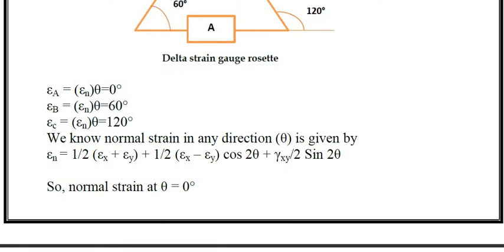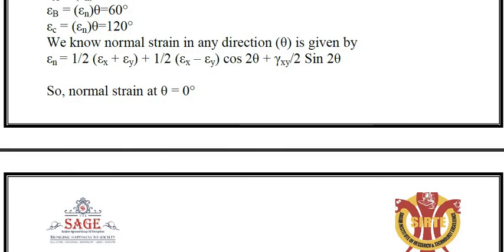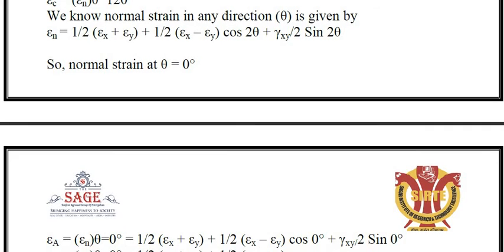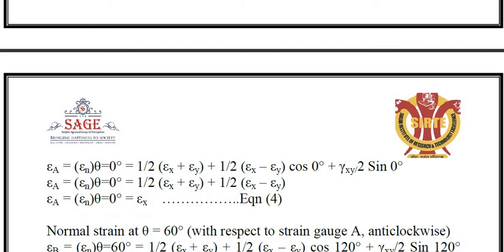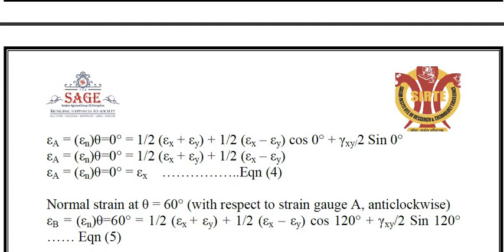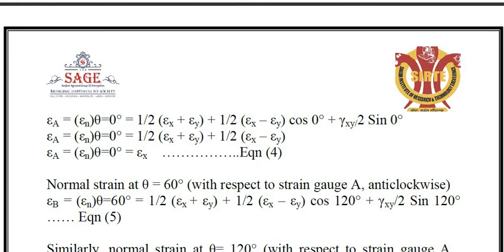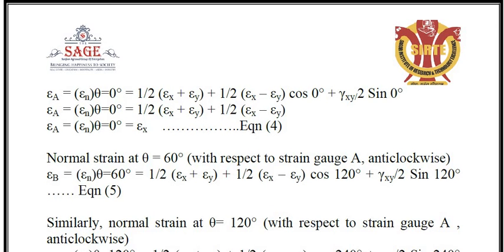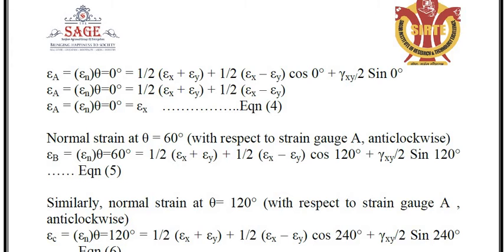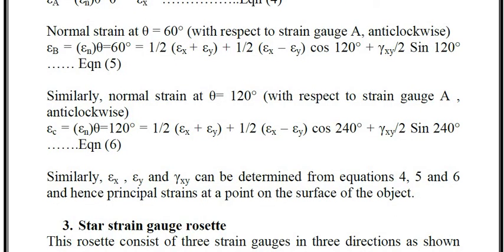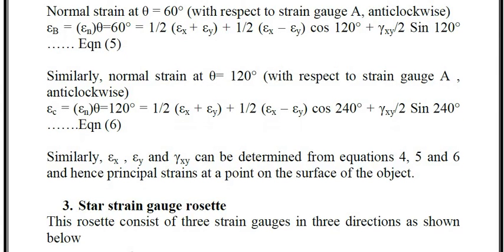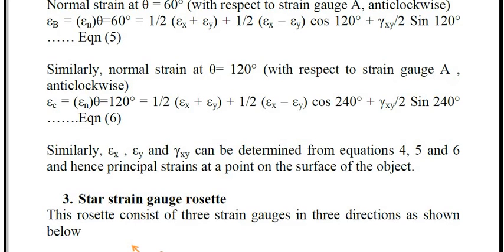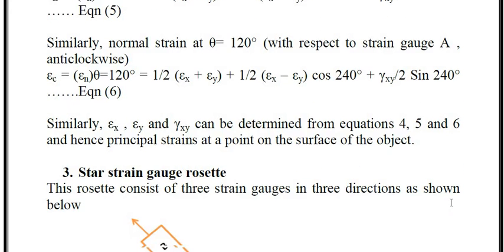Putting the value of theta: when theta equals 0, the strain value at A is given by equation 4. When theta equals 60 degrees, we get equation 5. When theta equals 120 degrees, we get equation 6. These three equations are combined to find the principal strain at a point on the surface of the object.